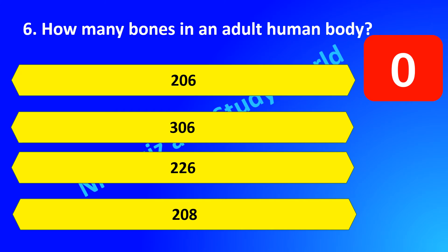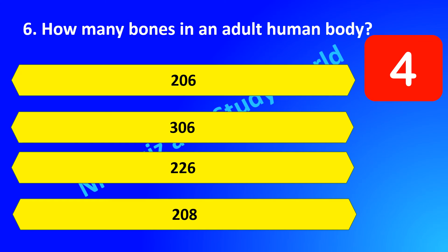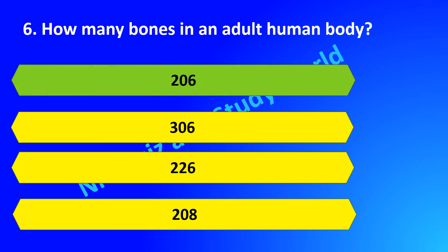How many bones are there in an adult human body? Is it 206, 306, 226, or 208? The answer is 206 bones.